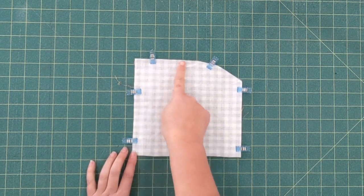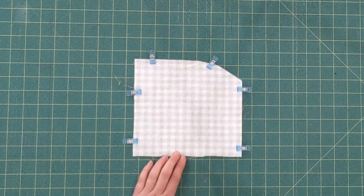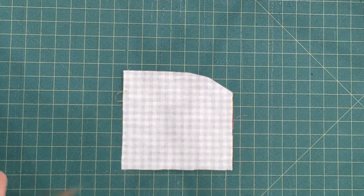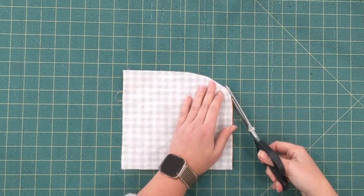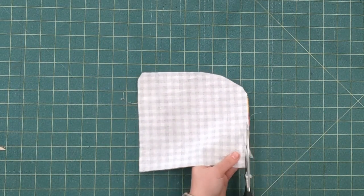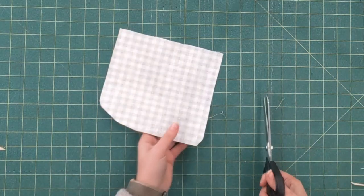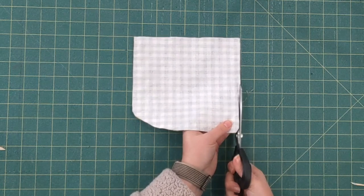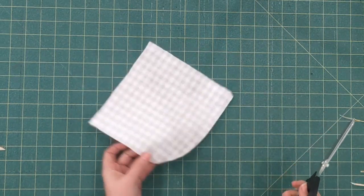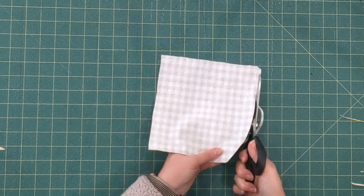You're going to stitch all the way around the two sides and also the curved edge, leaving the bottom open with a quarter inch seam allowance. Now it's all stitched together and I'm going to clip the corners and trim the seam allowance down, about an eighth of an inch away from the seam line, because we don't want it to be too bulky in our next step.